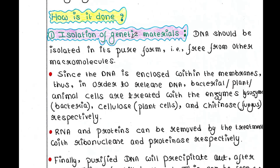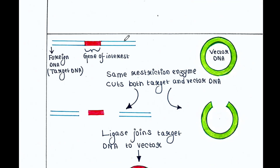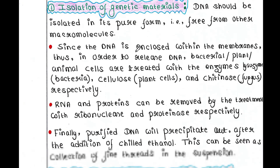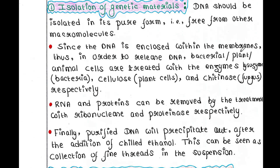The first step is isolation of genetic materials. The DNA should be isolated in its pure form, free from other macromolecules. Suppose you need to isolate DNA from a plant tissue. The first thing you need is to break down the cell, then only you can get the DNA. The DNA is enclosed within membranes — within the nuclear membrane in the case of eukaryotes, and in prokaryotes the DNA is naked in the cytosol. The whole thing is enclosed within the cell wall.